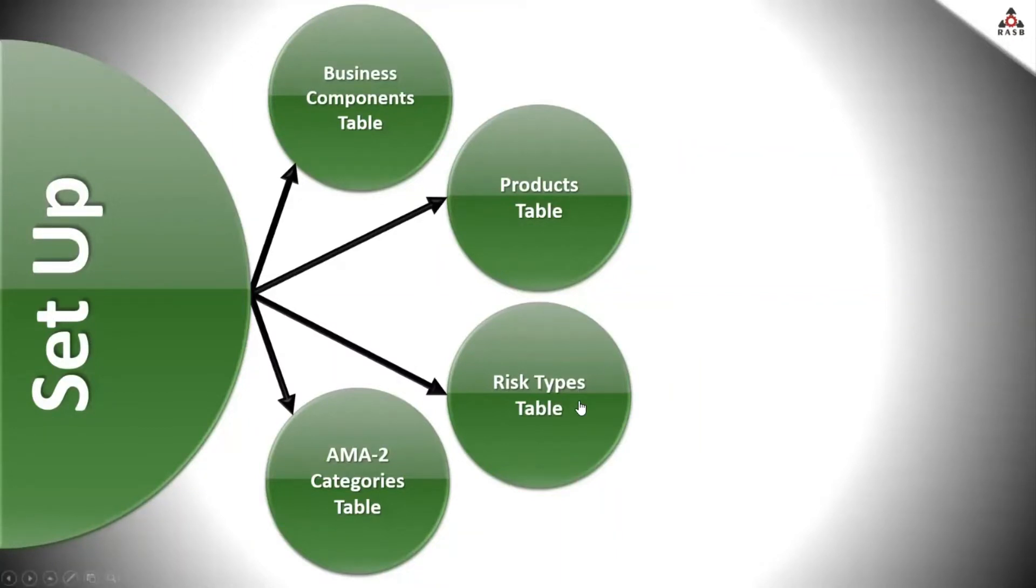The risk types table. For the purpose of non-financial risk calculation engine, principal operation risk types are standardized for each industry sector. And for the banking industry, they include, for example, processing risk, trading risk, lending risk, etc.